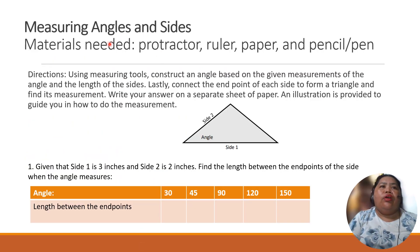So, let's go now to measuring angles and sides. We need here material. Of course, you need a protractor, ruler, paper, and pencil or pen. So, directions: using a measuring tool, construct an angle based on the given measurements of the angle and the length of the sides. Lastly, connect the endpoints of the side to form a triangle and find its measurement. Write your answer on a separate sheet of paper. An illustration is provided to guide you in how to do the measurement.